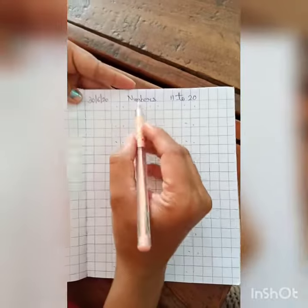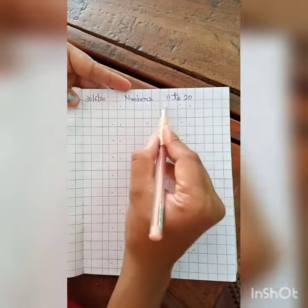Today, we are going to learn how to write numbers 11 to 20 in a square line book.